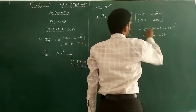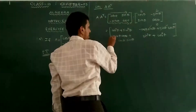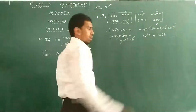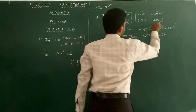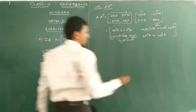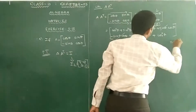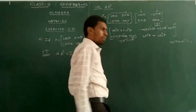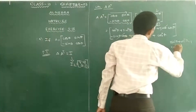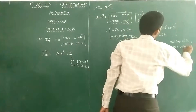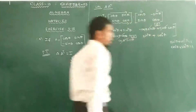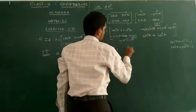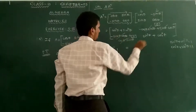The off-diagonal sin θ cos θ terms are opposite in sign and cancel, giving 0. Applying the trigonometric identity sin²θ + cos²θ = 1, the diagonal elements equal 1. So the result is [1, 0; 0, 1], which equals the identity matrix I. This answer gives 1, 0, and 1 for the respective positions.